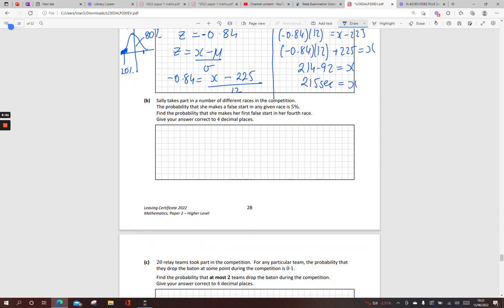Next one. Sally takes part in a number of different races. Probability that she makes a false start is 5%. So the probability of not being a false start is 95%. Find the probability that she makes her first false start in her fourth race. So what is she doing here? First race, not false start. And, how do we say and in that? It says multiply. Another not false start. Another not false start. And then a false start.